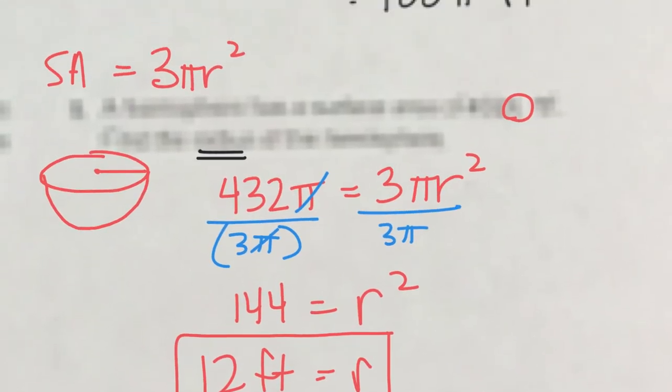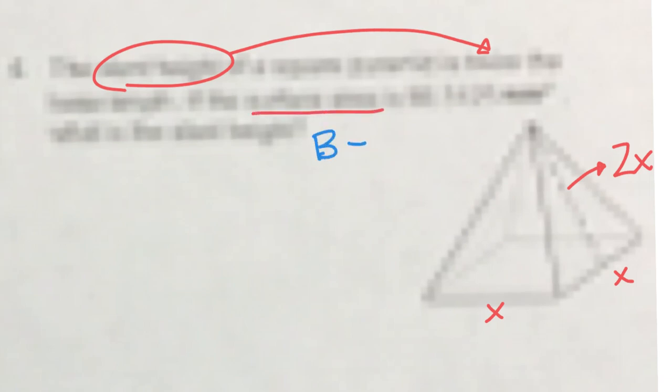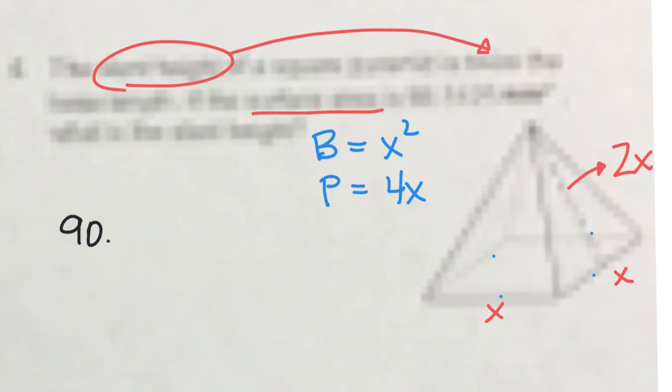Number 4 is a square pyramid where the slant height is twice the base length. Since the base length is unknown, call it x, so the slant height is 2x. Base area of a square with side x is x squared. Base perimeter with side x is x plus x plus x plus x equals 4x. Now plug into the surface area formula: 90.3125 equals one base area plus half of the perimeter times the slant height.